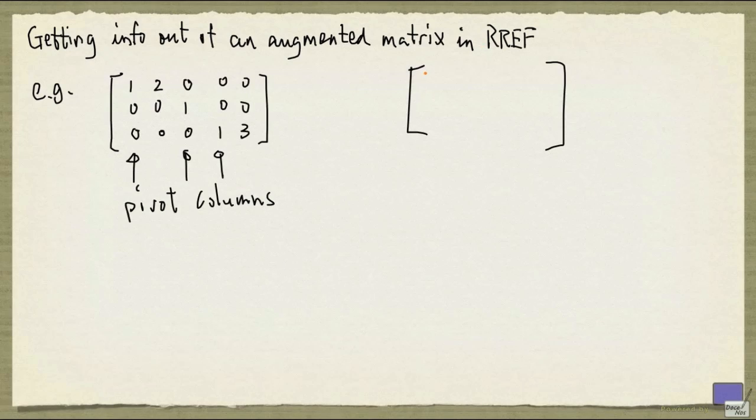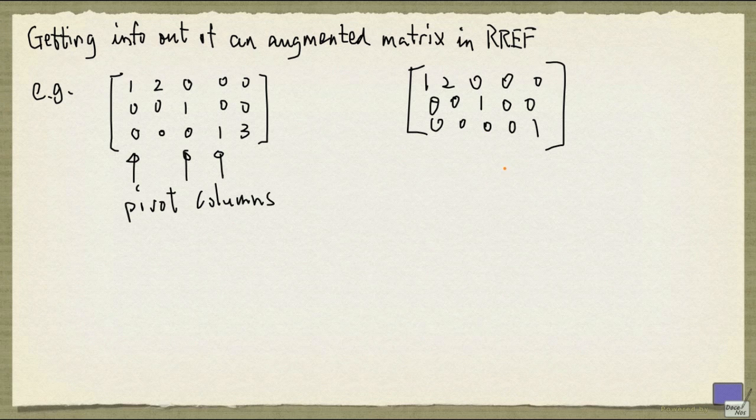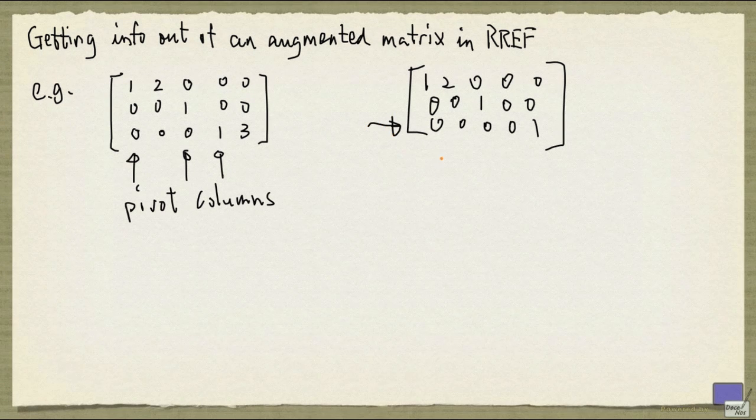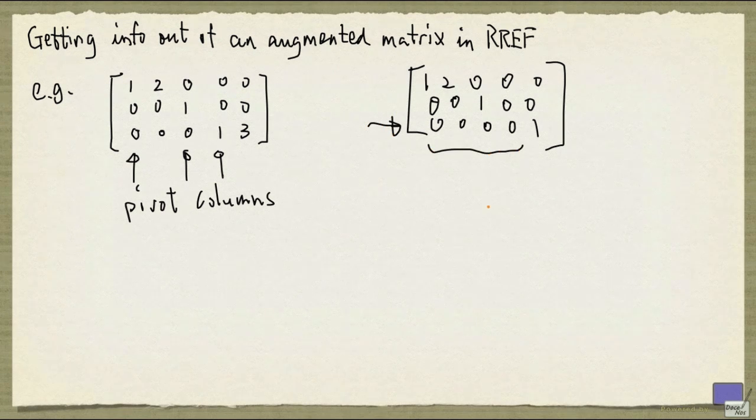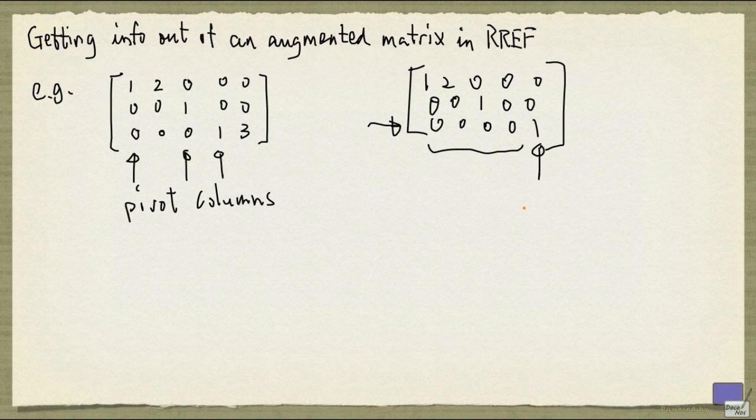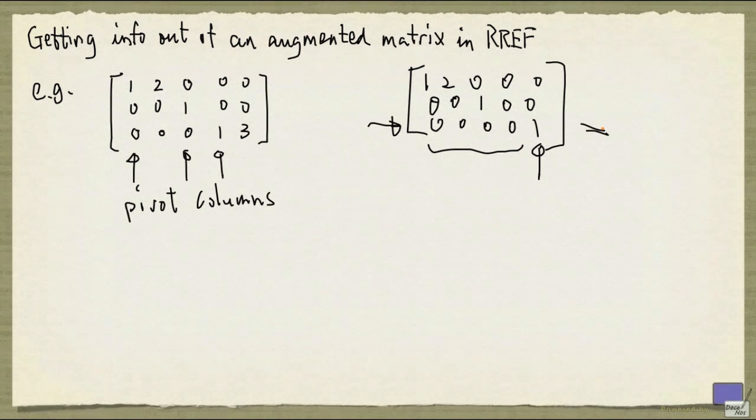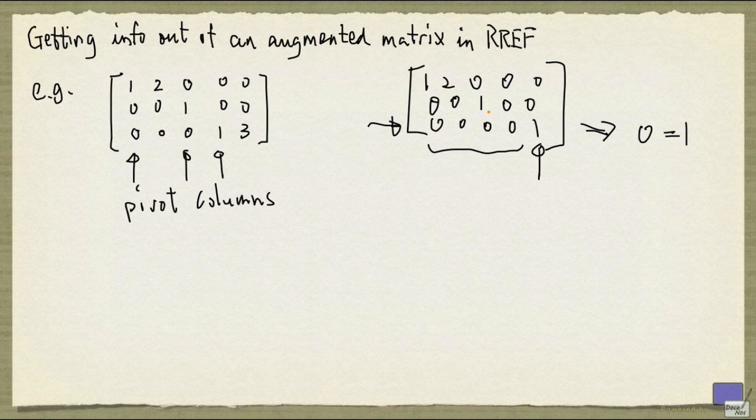Now, if the matrix instead look like this, this again is in reduced row echelon form, but here, if I look at the third row, the entries that correspond to the variables are all zero, whereas the entry corresponding to the right-hand side is non-zero. If this is what you get after row reducing an augmented matrix, you will see that there's no solution, because this last row corresponds to the equation 0 equal to 1. No solution can possibly satisfy this. And so whenever you see something like this, you can conclude that the system has no solution.